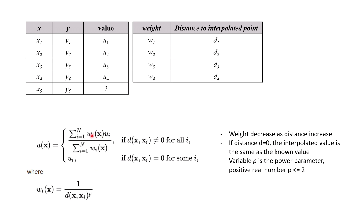The interpolated value is obtained by multiplying the known value with some weights and then dividing by the total weights. Since I have four known values, I have four weights. The weight is calculated based on the distance between the location of the known value and the location of the interpolated point. The weight decreases as the distance increases. For the power parameter p, you can choose values of one or two.